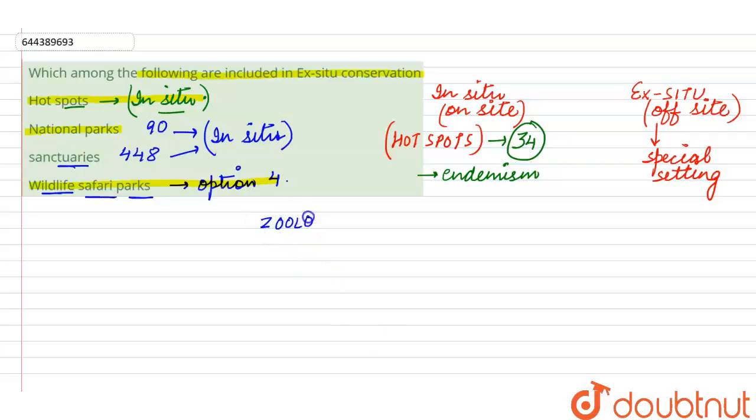Now, along with this, we have certain other approaches for the ex situ conservation. This will be for the animals, it is zoological parks, whereas for the endangered plant species, it will be botanical parks.